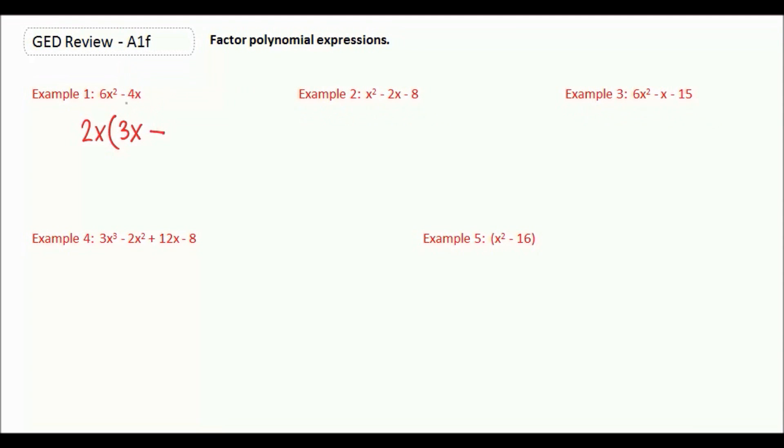Minus 2 times 2 would give us the 4. And we have x and x, so we don't need any other x's. So this is our factored answer.